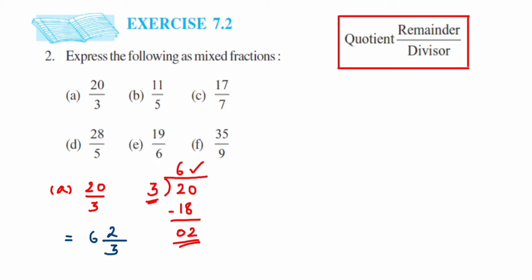Now the second one: 11 upon 5. Divide it. 5 times 2 is 10, so the remainder will be 1. When you write it, 5 is in the denominator, the answer is 2, and the remainder is 1. You can cross-check by opening the mixed fraction: 2 times 5 is 10, plus 1 is 11.